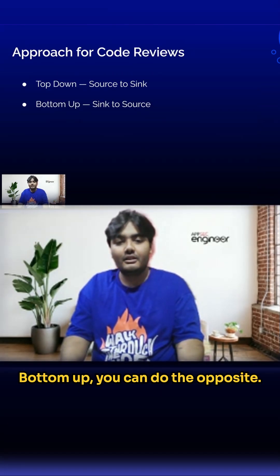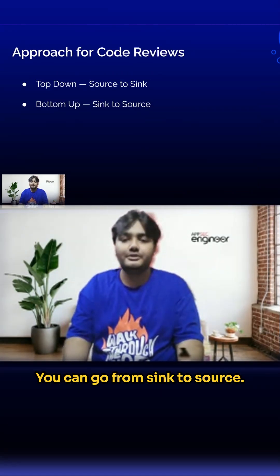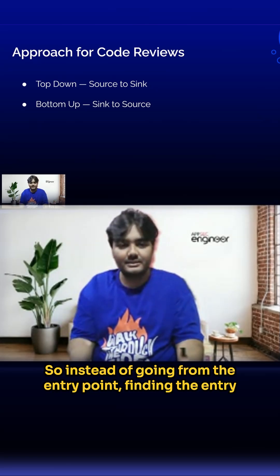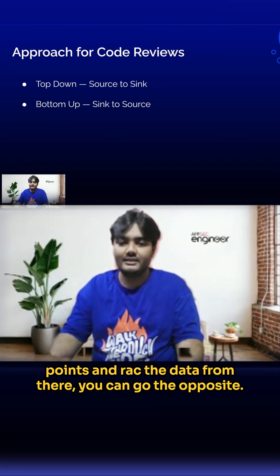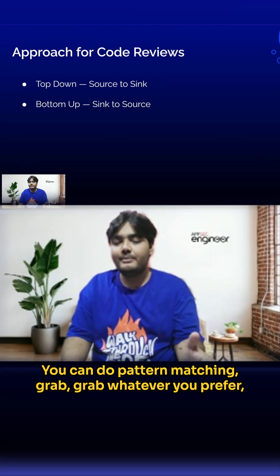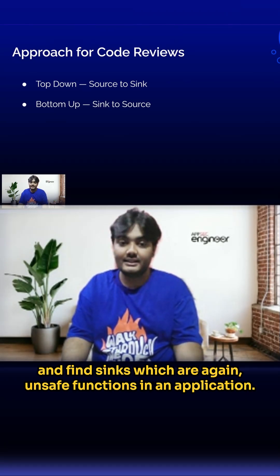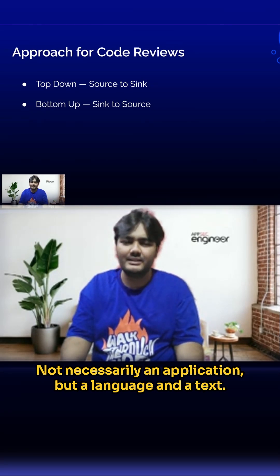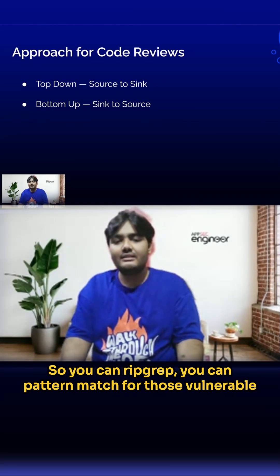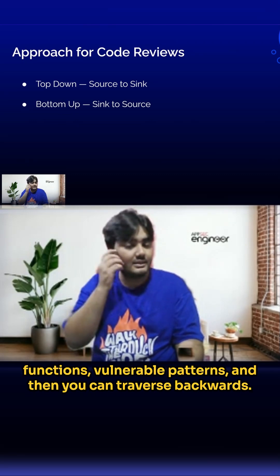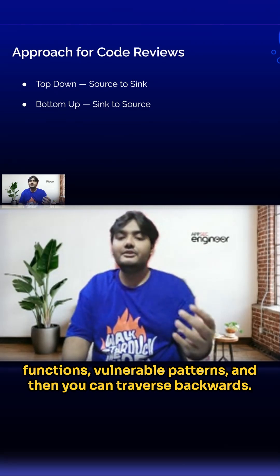Bottom-up, you can do the opposite — you can go from sink to source. Instead of finding the entry points and tracing the data from there, you go the opposite way. You can do pattern matching with ripgrep or grep or whatever you prefer, and find sinks, which are unsafe functions in an application — or more broadly, in a language and a context type. So you can ripgrep, pattern match for those variable functions and variable patterns, and then traverse backwards.